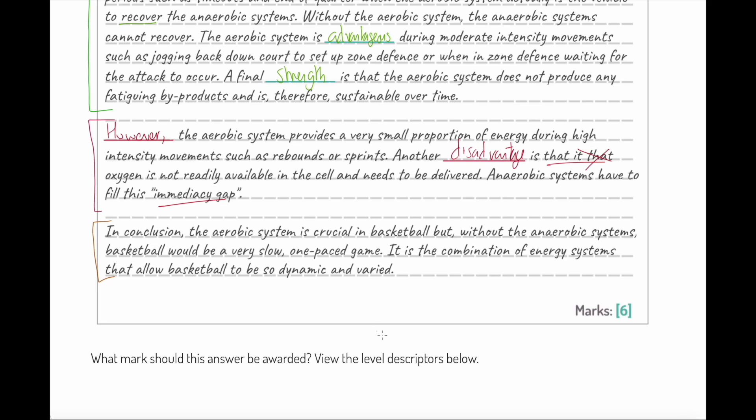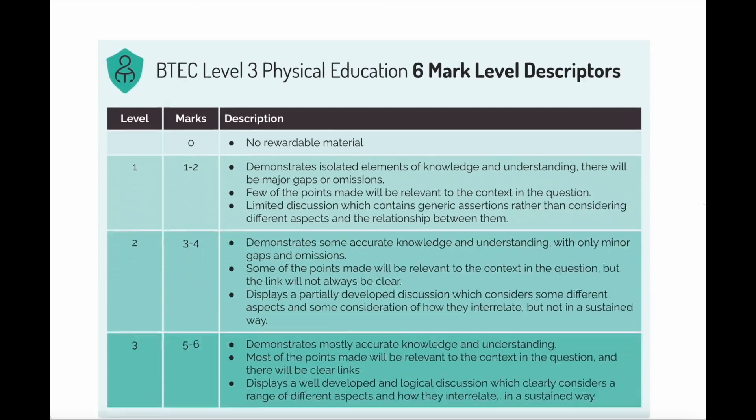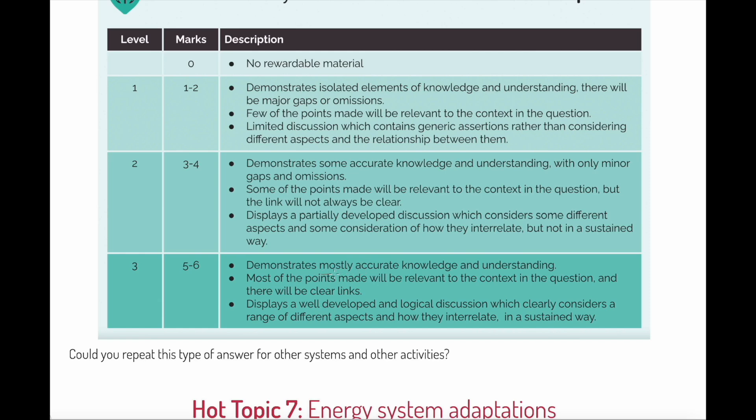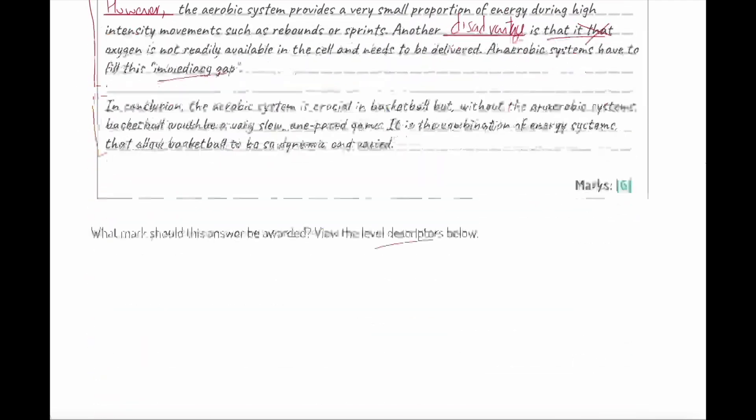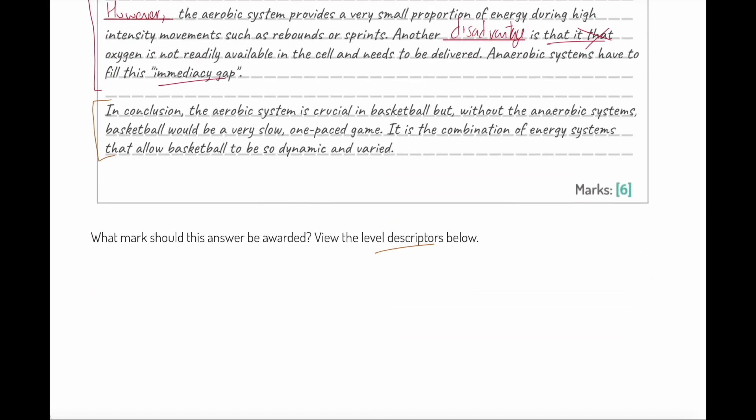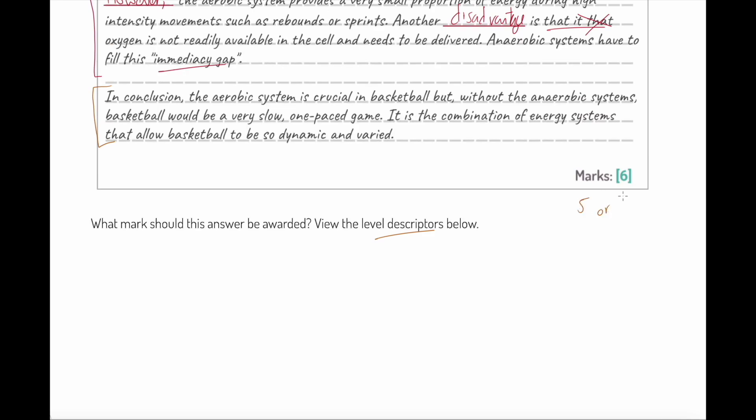Let's have a look at the level descriptors. To be in the top band, we've got mostly accurate knowledge—our person's done that. Most of the points made will be relevant to the question—that's been done. It displays a well-developed and logical discussion with a structure that clearly considers a range of different aspects and how they interrelate. Our student has clearly thought about that command, made the link from the aerobic system to basketball throughout, clearly shown positives and negatives, and concluded.